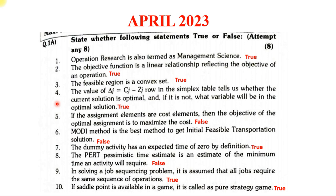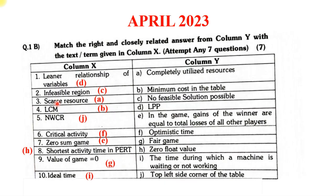The next question under April 2023 was Match the Columns. The answers have been marked. The linear relationship of a variable is LPP; feasible region with no feasible solution possible is infeasible; scarce resources completely utilized is resources; LCM is minimum cost in the table; NWCR is the top-left corner of the table; critical activity is optimistic time; zero-sum game is where the winner's gains equal the total losses of all other players; shortest activity time in PERT is zero float; value of the game zero is a fair game; idle time is the time during which a machine is waiting or not working.